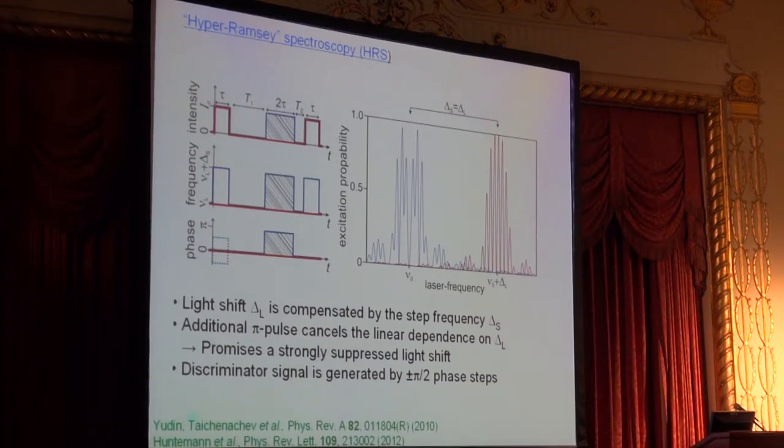Now comes the hyper-Ramsey idea, proposed by Yudin and Taichenachev: to add a third pulse of the same detuning and same intensity—a pi pulse in between the two Ramsey pulses with an inverted phase. What this pulse does—the total pulse area is now 2π—is create a minimum at the unperturbed frequency. The important point is that this pulse, like an echo pulse, eliminates the sensitivity of the position of the central feature to the exact value of this compensation frequency. So it reduces the sensitivity of this feature to the light shift. The error signal can now be produced by using an additional π/2 phase jump in one of the Ramsey pulses.